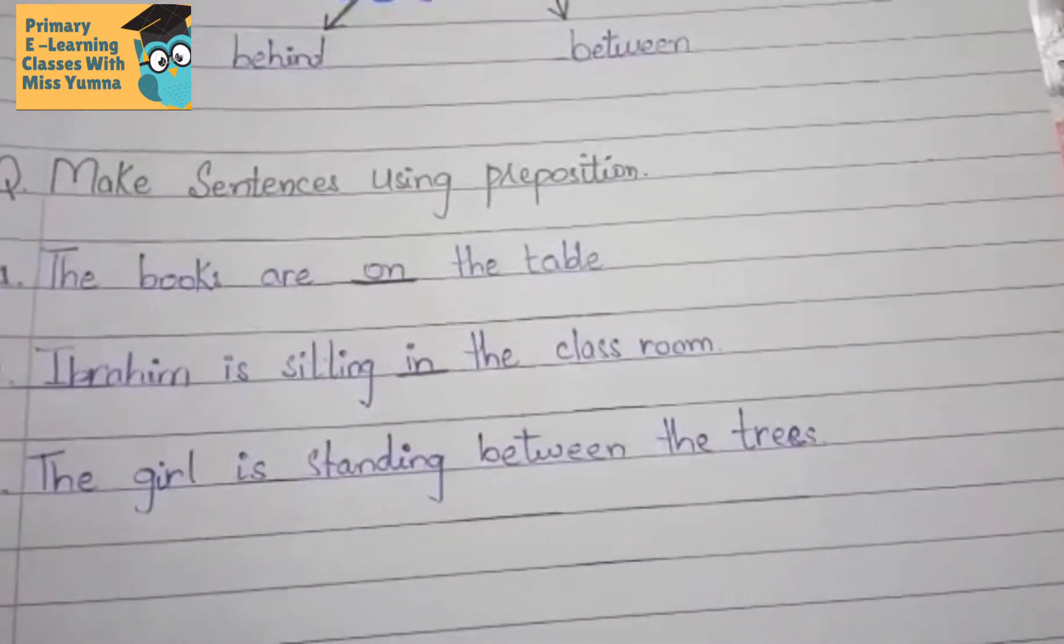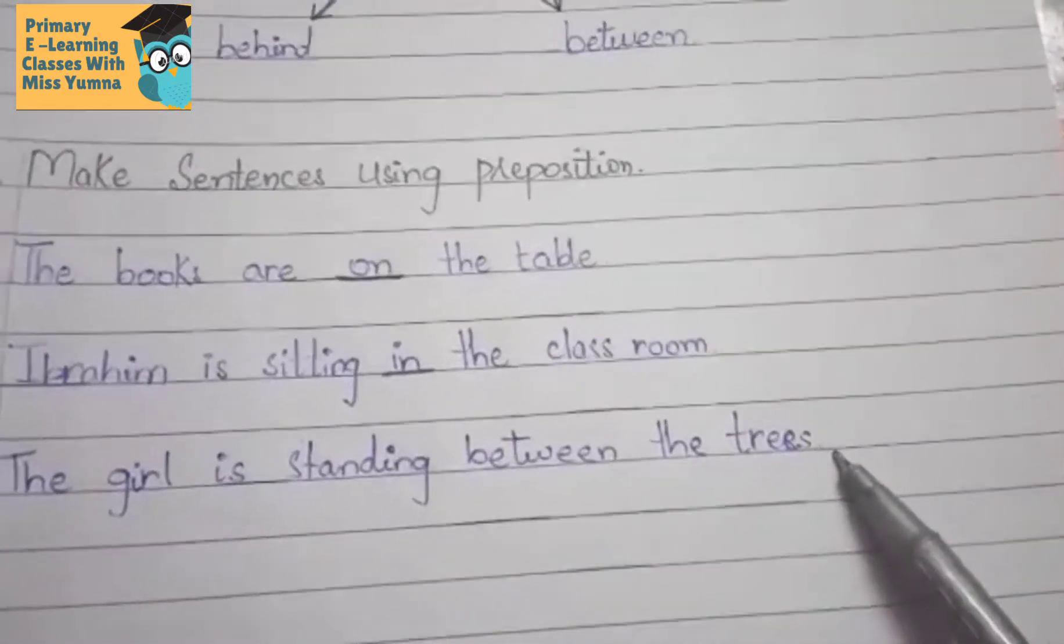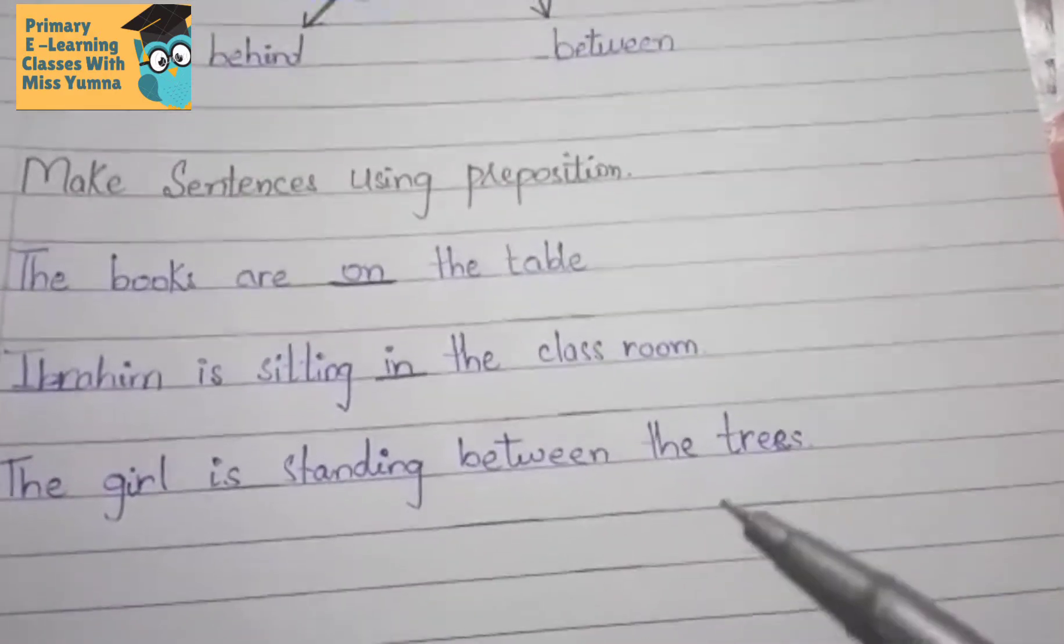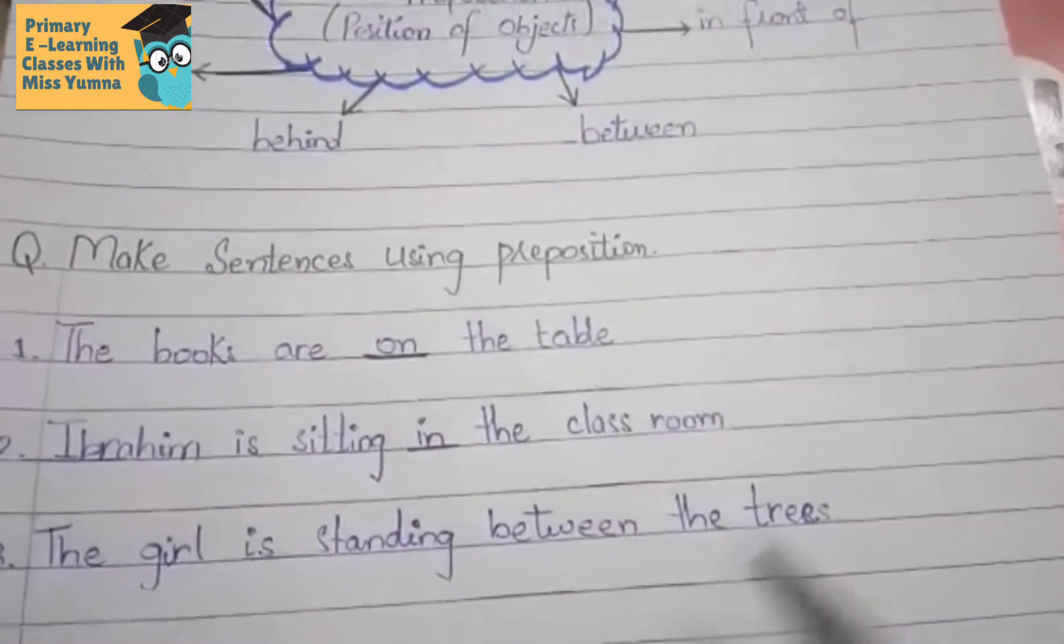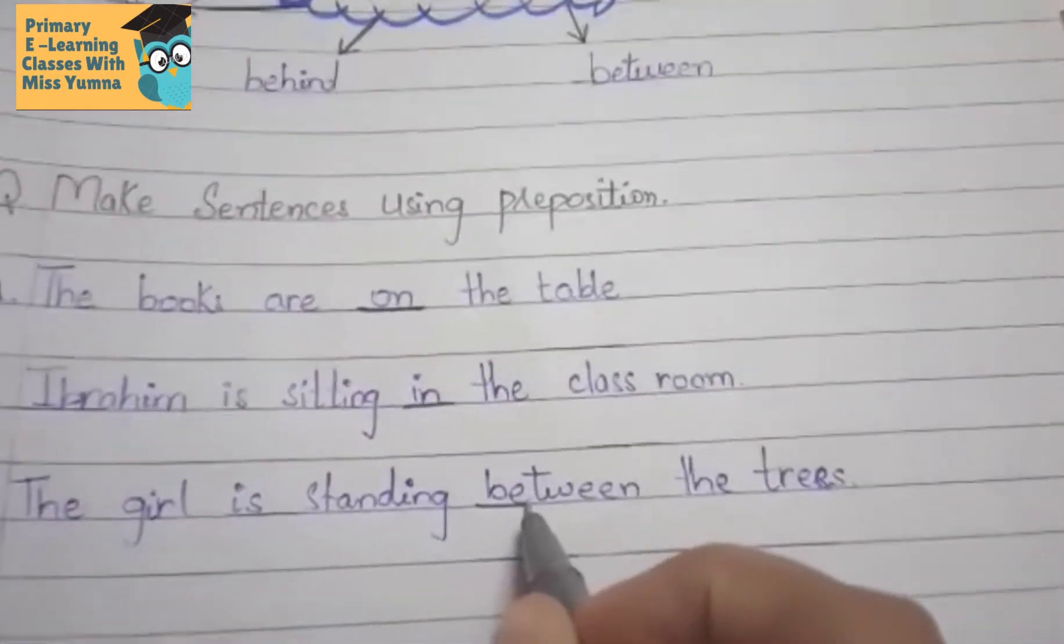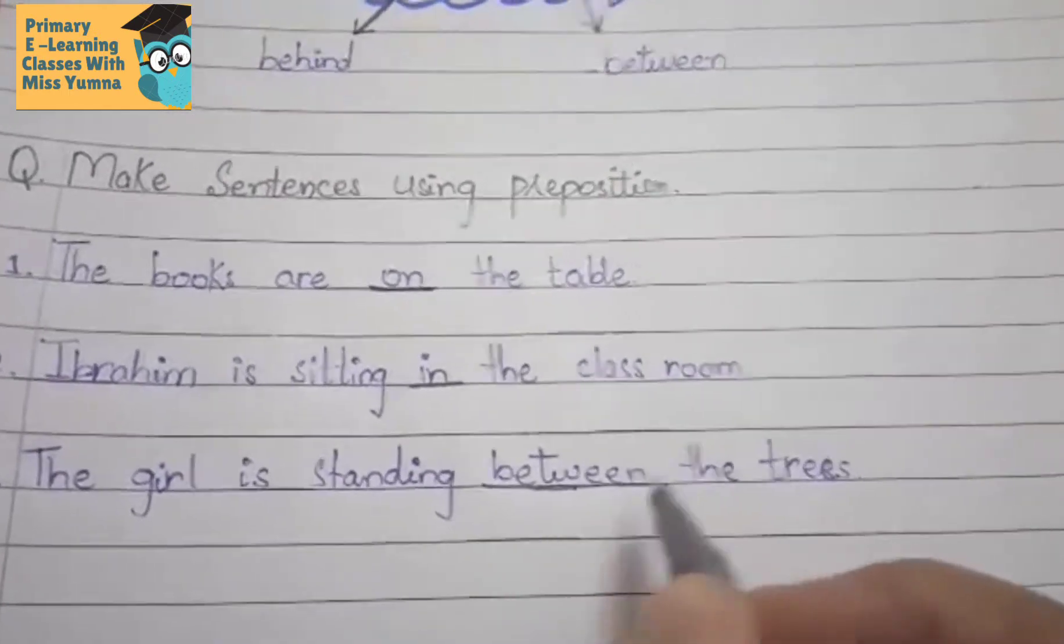Third sentence is the girl is standing between the trees. The girl is standing in the center of the tree. Here we know between is used, so you can underline between.